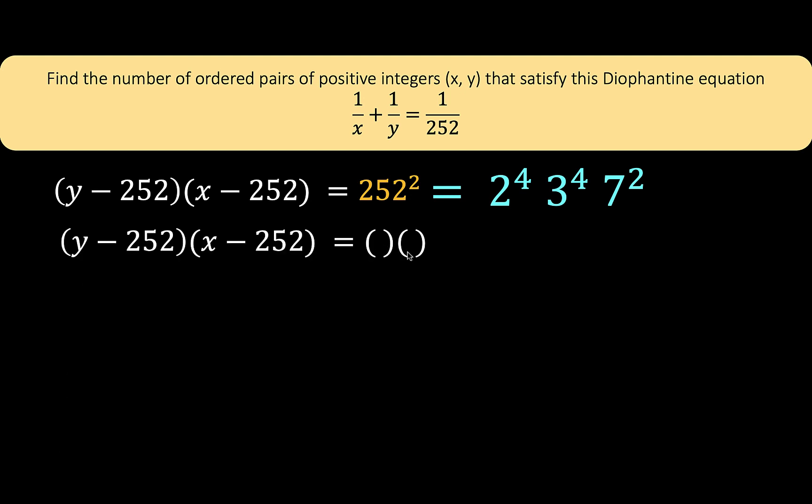Going back to the given, in order to have a positive product, it's either the first and second factor are both negative, or both are positive. Let's take a look at the negative case. We have y minus 252 is negative, which means y is less than 252. And x minus 252 is negative, meaning x is less than 252. But notice that the product should be 252 times 252. This is not possible, because we are looking for the positive integer solution. We know that y must be greater than 0, and x must be greater than 0. For the negative case, this range of values for x and y is not possible, because we cannot get a product of 252 squared.